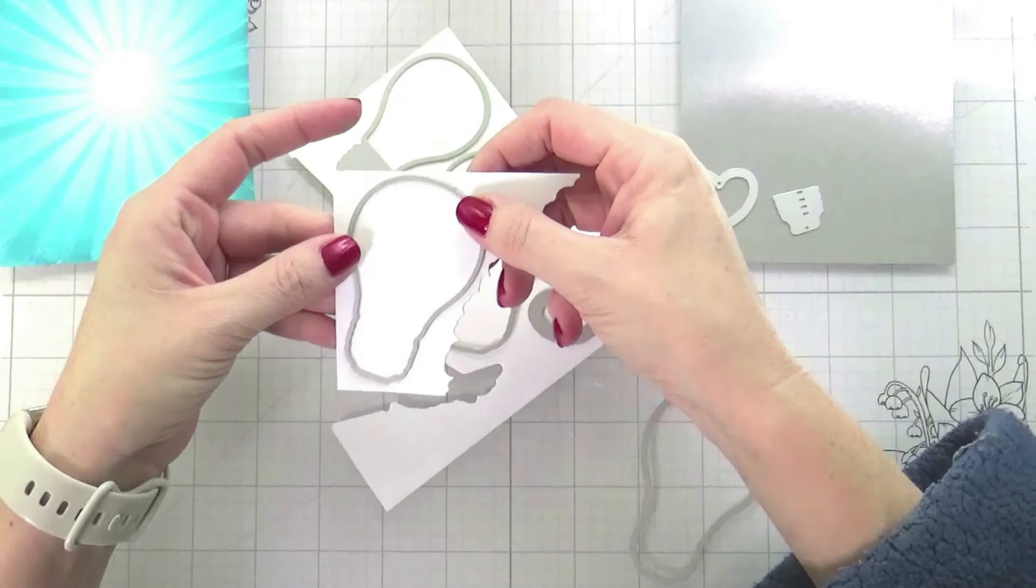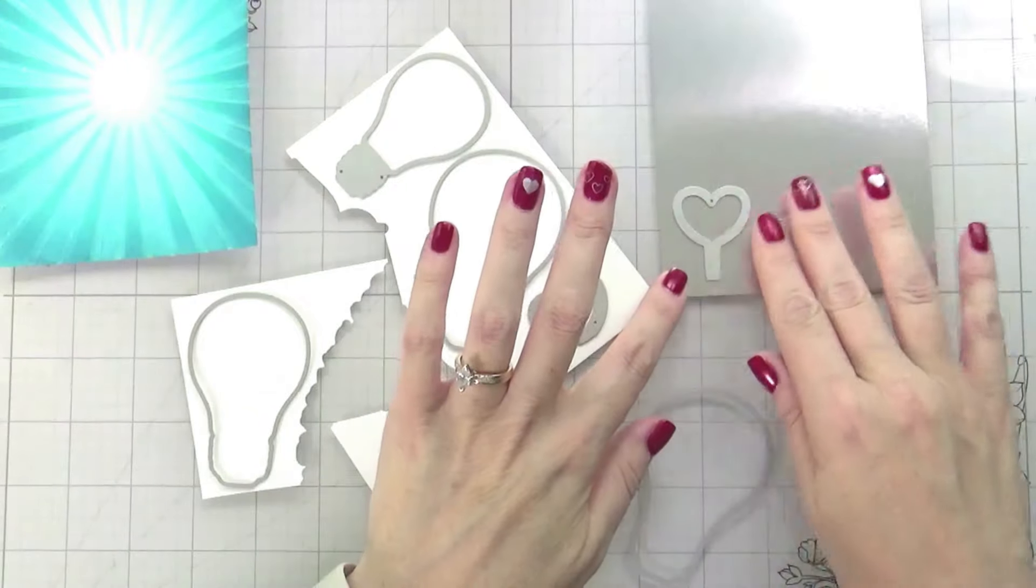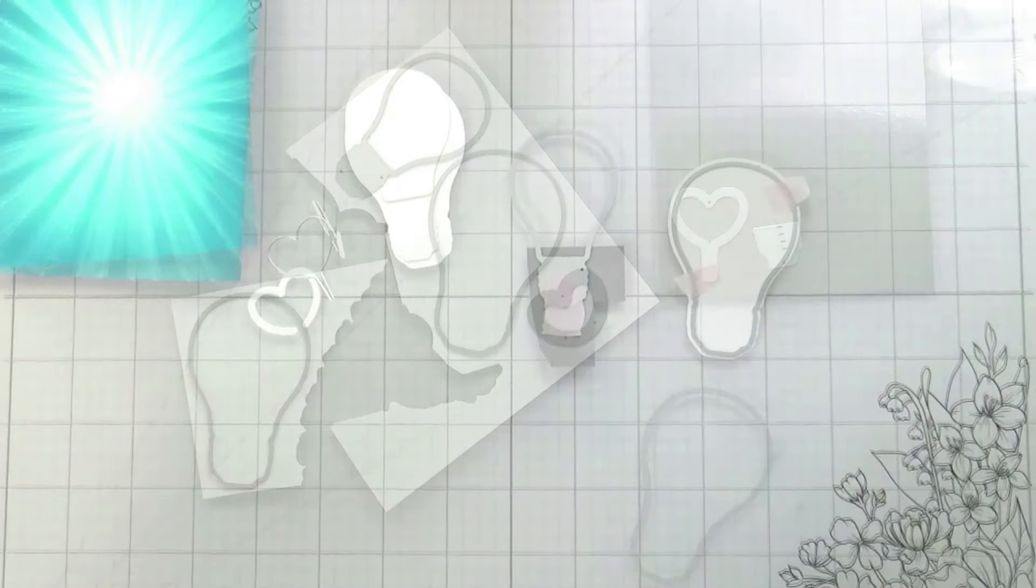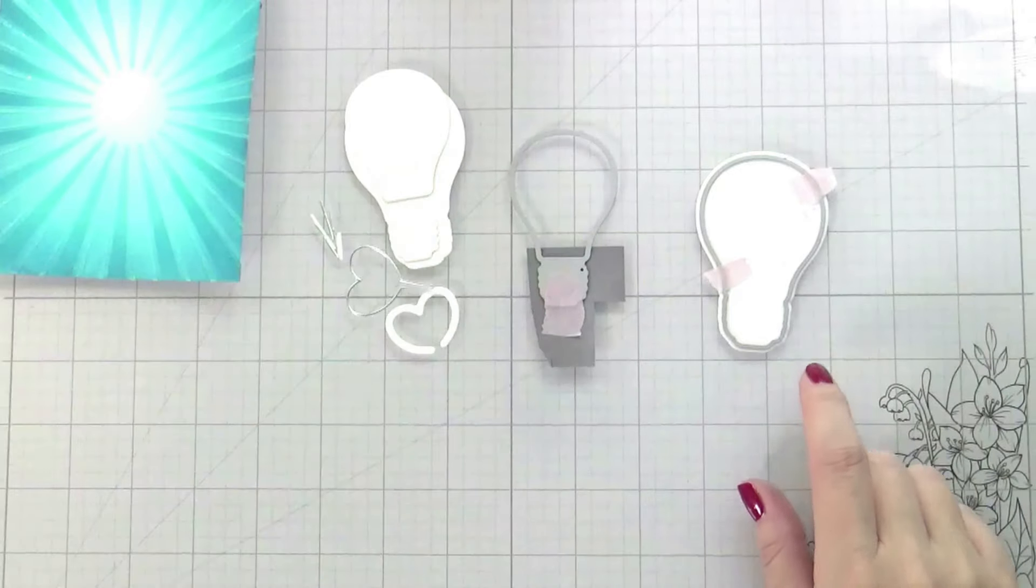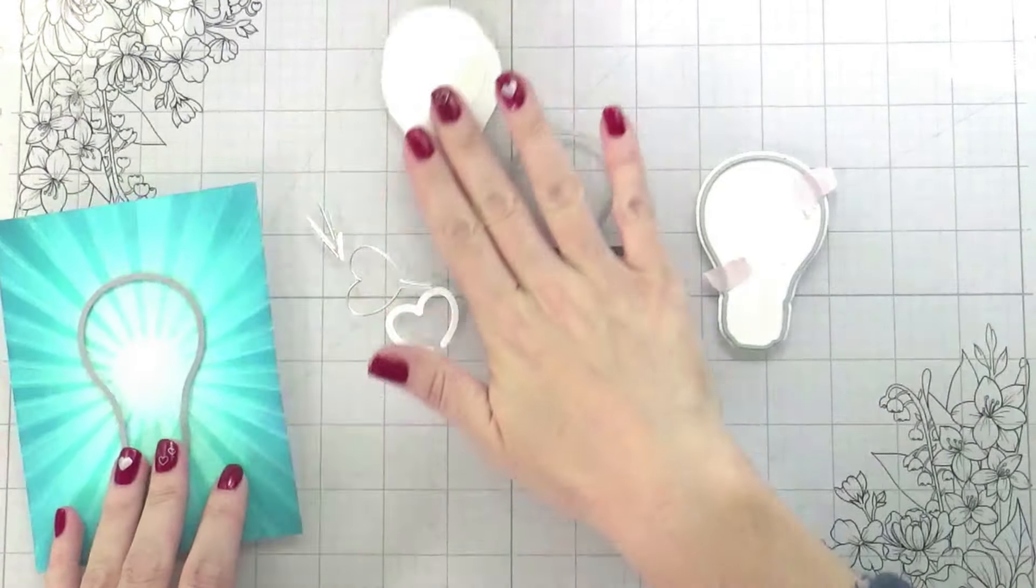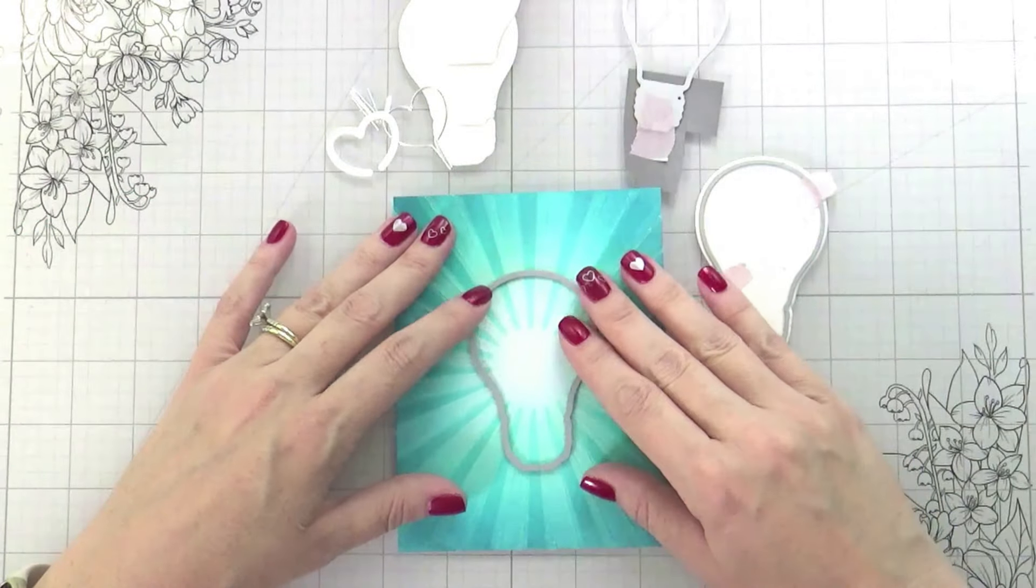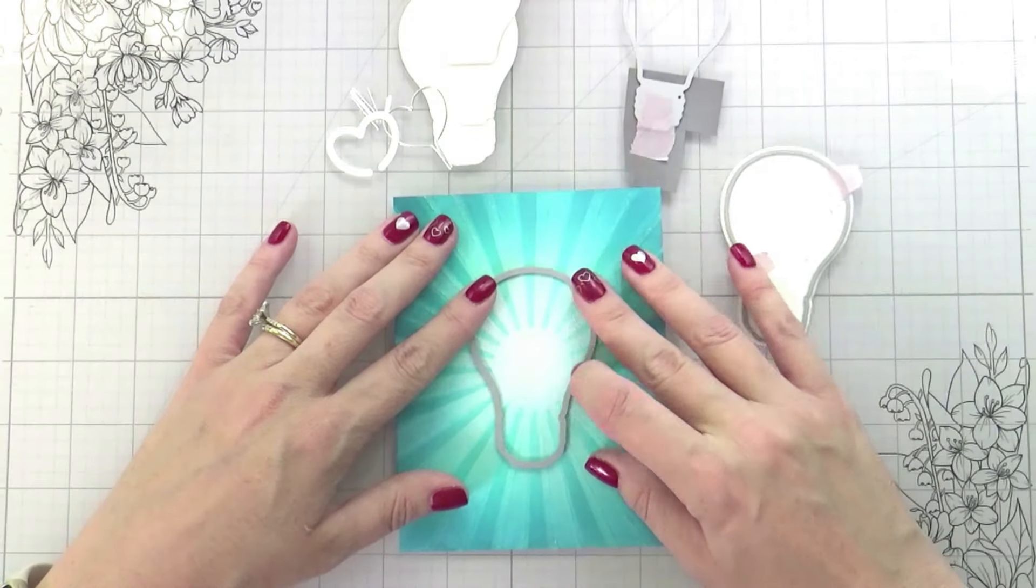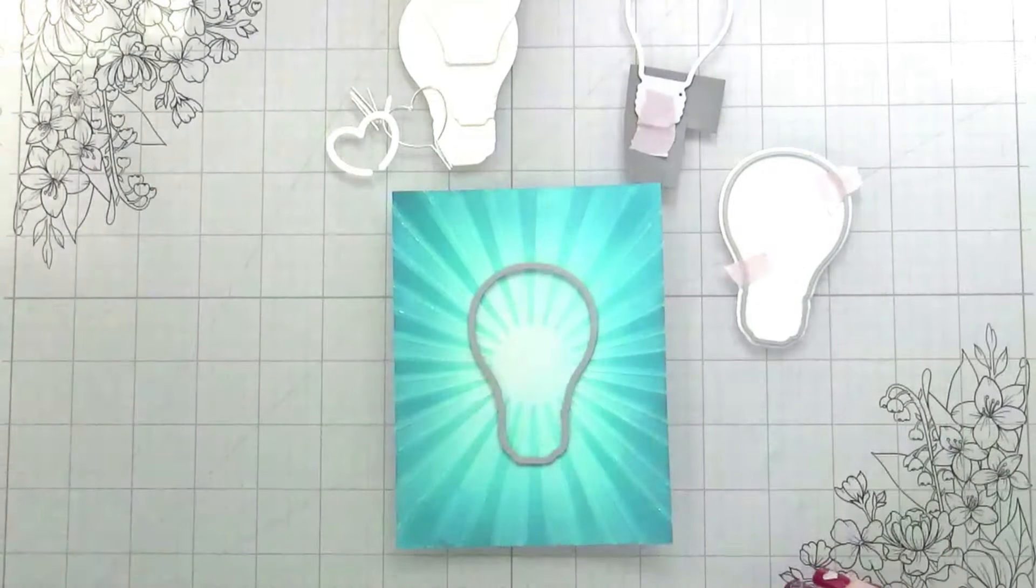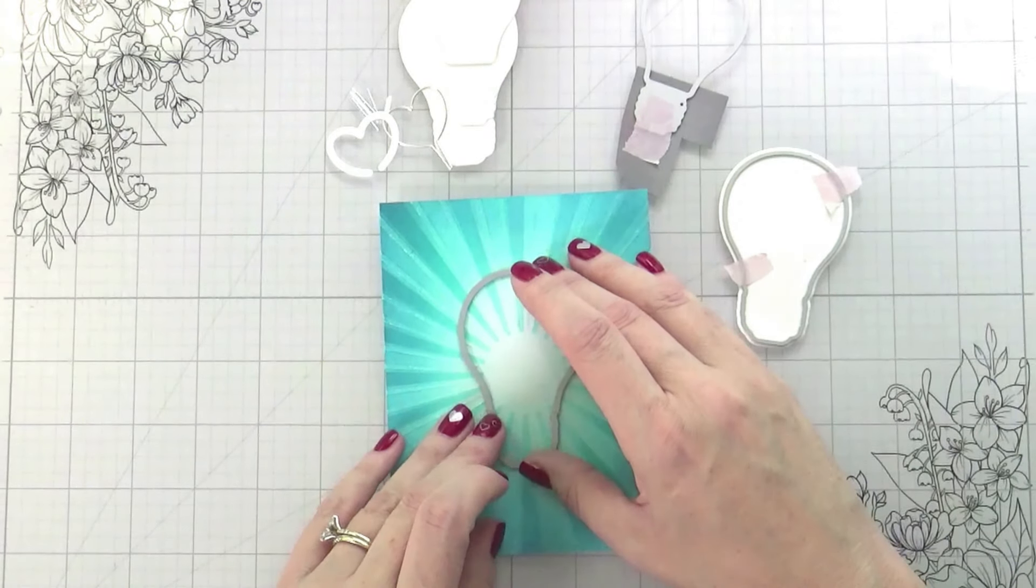I'm also cutting out the detail layer for the light bulb out of silver, and then everything else will be out of white. For the actual shaker element and light element to work, I do have to cut one of the light bulbs out of the center of the card. You'll see off to the right I'm also cutting myself a frame, which I actually didn't even end up using.